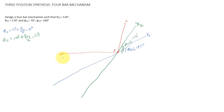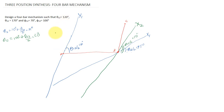Similarly, you have to mark the input angles. From point A, I am going to mark the line y1 at angle θ12/2. Since θ12 = 120°, θ12/2 = 60°. Next, I mark the line y2 at angle θ13/2. Since θ13 = 170°, θ13/2 = 85°.